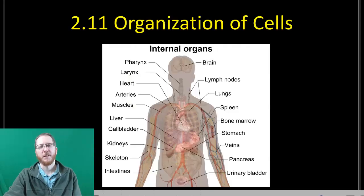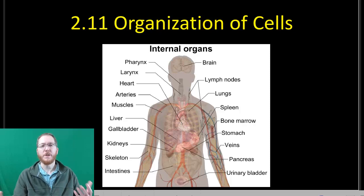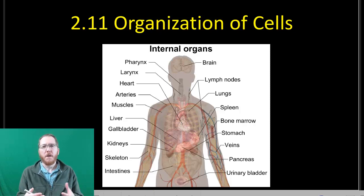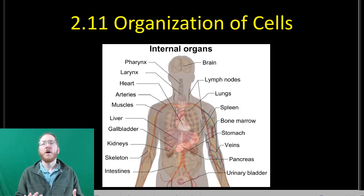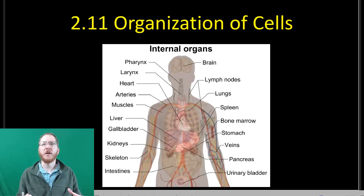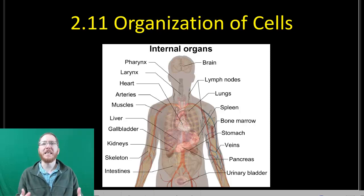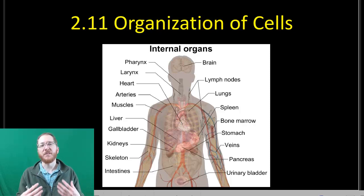Welcome to Section 2.11, Organization of Cells. In this section, we're going to rehash and extend this idea of organization from simple unicellular organisms all the way up into multicellular organisms, and explain how multicellularity may have evolved from previously unicellular organisms. This will also wrap up everything with cells prior to cell transport, which covers how we get things into and out of the cell and how our body balances them.